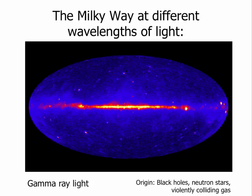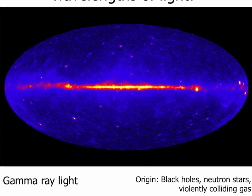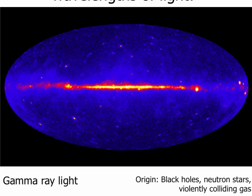Finally, the shortest wavelength light is gamma ray radiation. Yellow means very bright, blue means very little gamma rays. Gamma ray radiation comes from very energetic processes such as black holes, neutron stars, or very violent collisions of gas, so there are very few sources. Most of what you see in the Milky Way are neutron stars and black holes. Most of what you see outside the Milky Way are very distant galaxies with gigantic black holes at their centers gobbling up tremendous amounts of gas and emitting gamma rays.